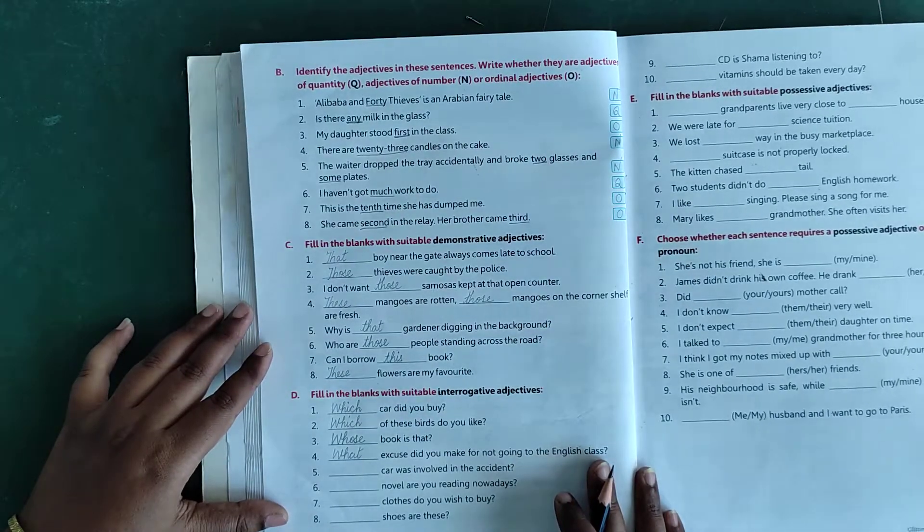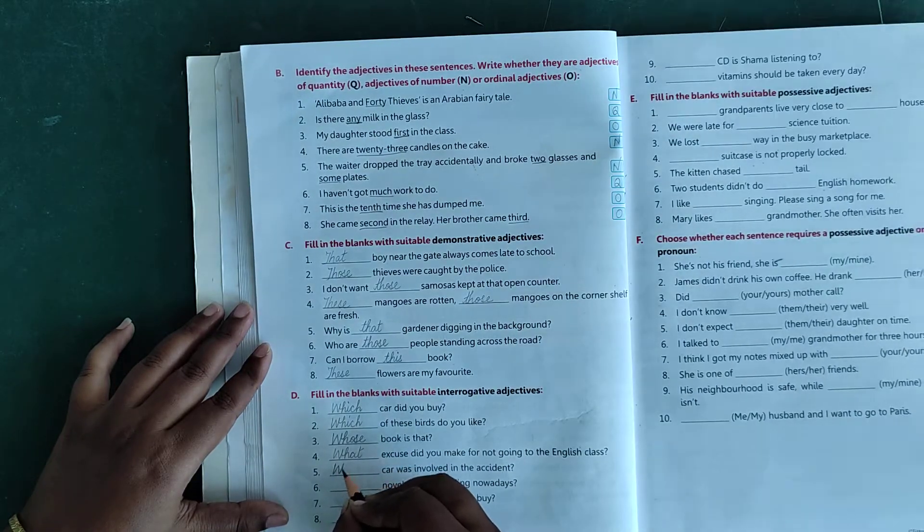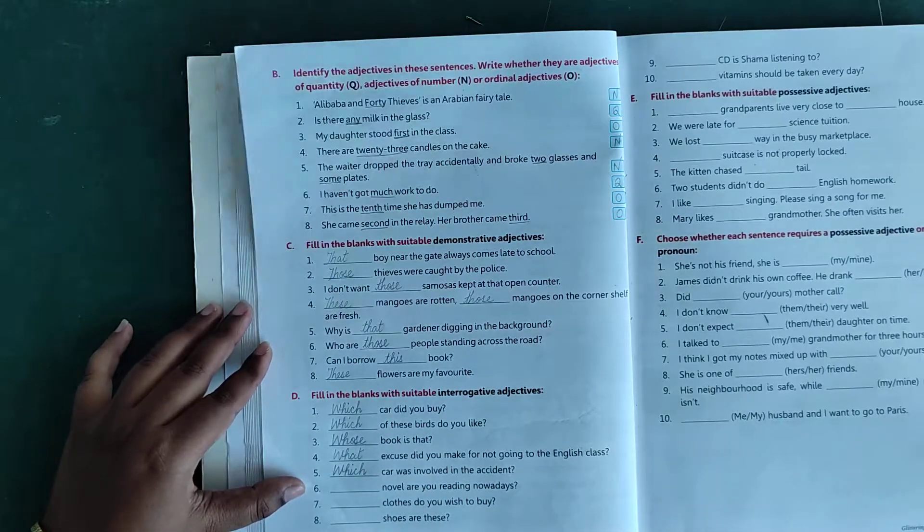Number 5: dash car was involved in the accident? Which car was involved, W-H-I-C-H, which.